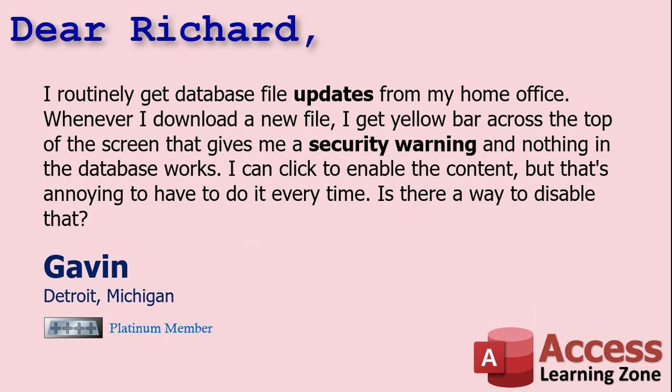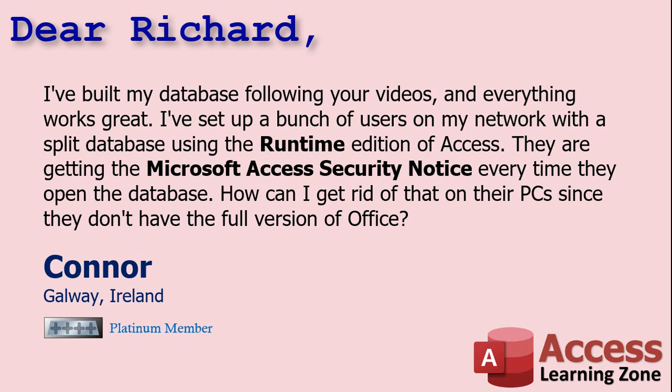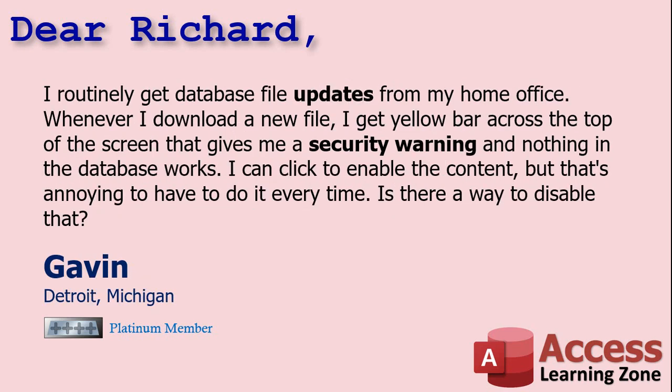Today we've got two questions. The first one is from Gavin in Detroit, Michigan, one of my Platinum members. And later on, we'll be hearing from Connor in Galway, Ireland. Gavin says: I routinely get database file updates from my home office. Whenever I download a new file, I get a yellow bar across the top of the screen that gives me a security warning, and nothing in the database works. I can click to enable the content, but that's annoying to have to do it every time. Is there a way to disable that?